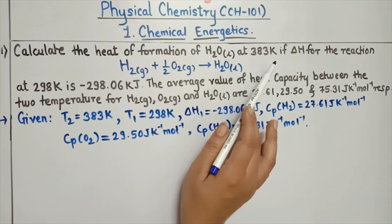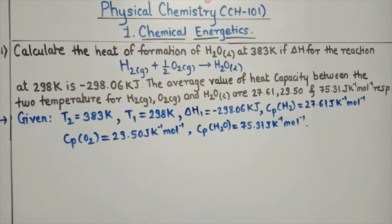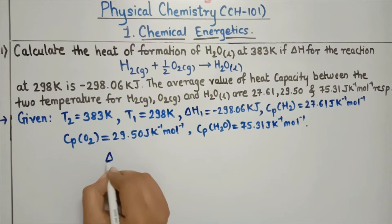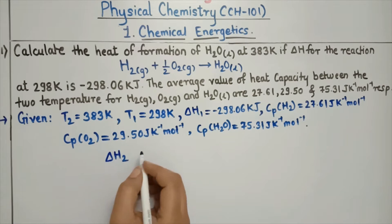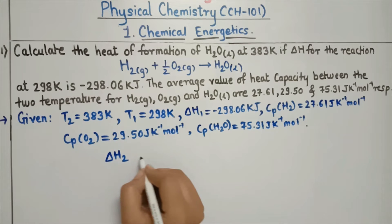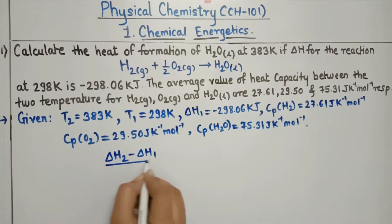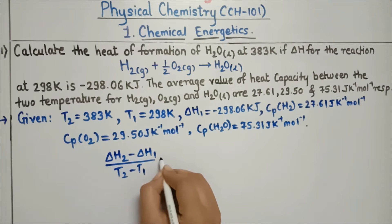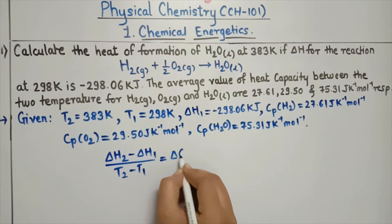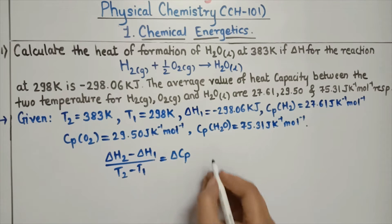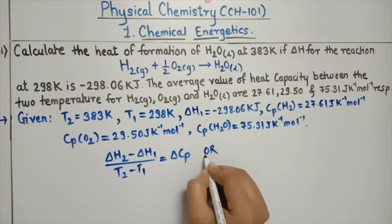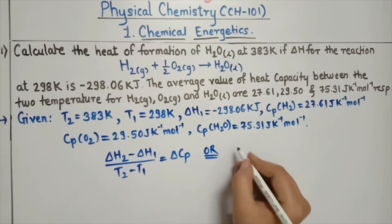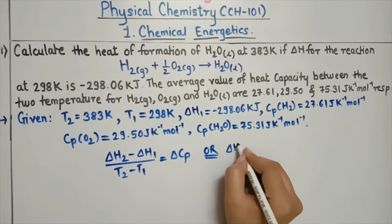According to Kirchhoff's equation: (delta H₂ minus delta H₁) divided by (T₂ minus T₁) is equal to delta Cp. Or, the other form: delta H₂ equals delta H₁ plus delta Cp into (T₂ minus T₁).